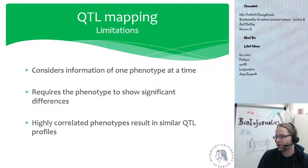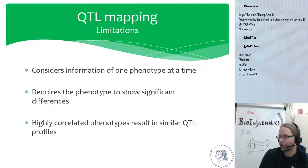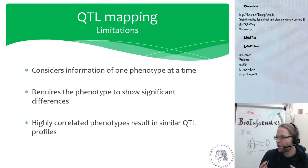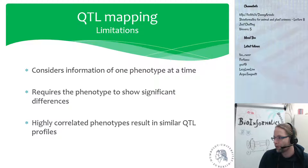Another problem is that if two phenotypes are very correlated with each other, their QTL profiles look exactly the same, because mapping one phenotype is similar to mapping the other since they are 99% correlated. This is one of the reasons why QTL mapping is sometimes not the best method. When I was doing my PhD, I thought about how to circumvent these limitations, because you want to not just consider a single phenotype but look at multiple phenotypes or the relationship between them.